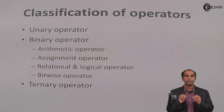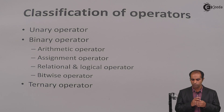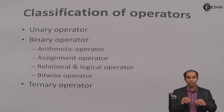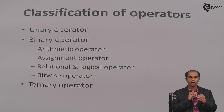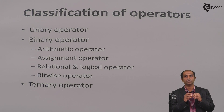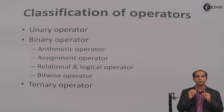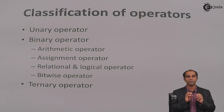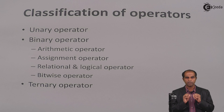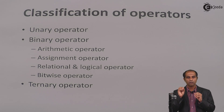Basically, classification is based on the number of data which are used for operation. Binary operators are further classified based on their operation. All those operators which are related to your mathematics are arithmetic. All those related to assigning values are assignment operators. All those related to relational and logical steps are classified as relational logical. And C has got one unique section of operators called as bitwise operators. Arithmetic operators are the ones which are common with your mathematics, but they will differ as and when you use them with different types of data.